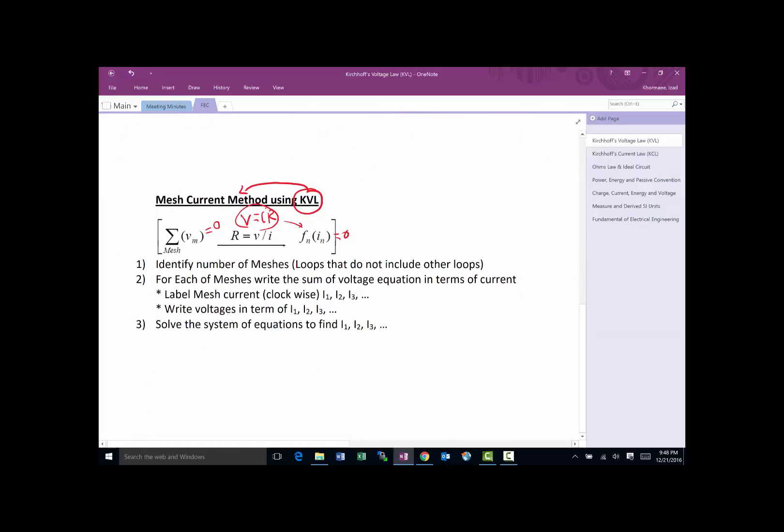There's basically three steps, much like the KCL case. You identify all the meshes—remember, loops that do not include loops are called meshes. Step two: for each mesh, we write the sum of voltage equation in terms of current. Then solve the system of equations to find all the currents in the circuit.